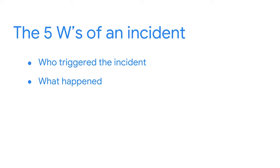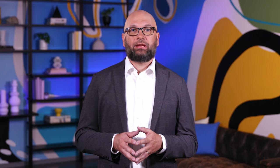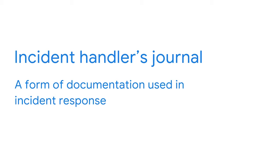Just like detectives working a case carefully handle and document their evidence and findings, security analysts are required to do the same when investigating a security incident. An incident investigation reveals critical information about the five W's: who triggered the incident, what happened, when the incident took place, where it took place, and why it occurred. A great way to track this information is to use an incident handler's journal, which is a form of documentation used in incident response. Throughout this course, you'll be using your own incident handler's journal to take notes of any incident details.